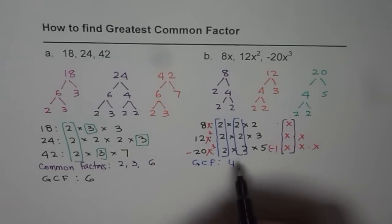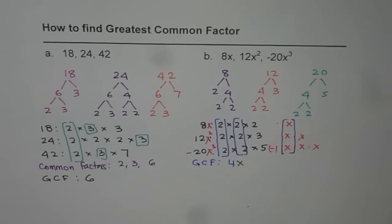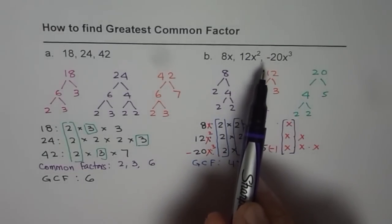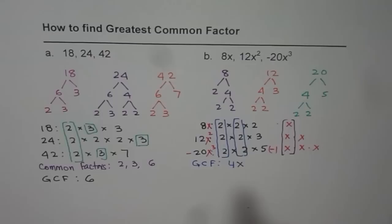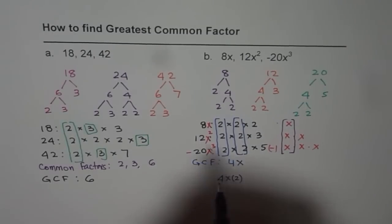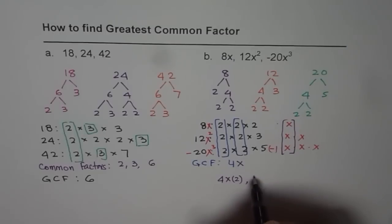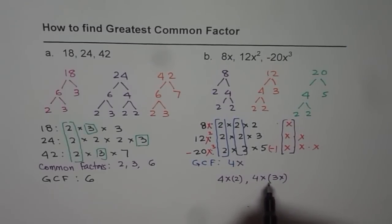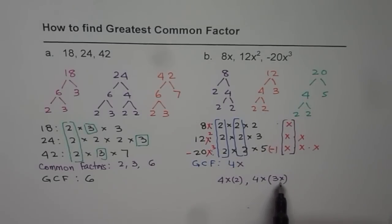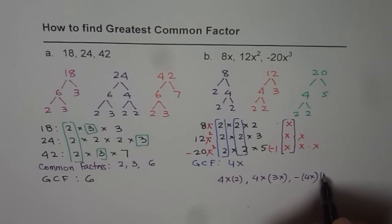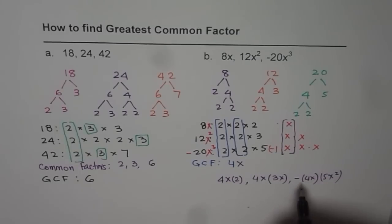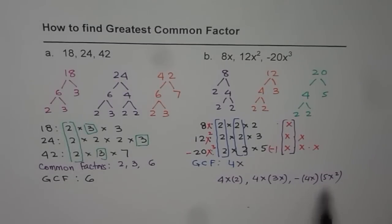Combining both the numeric and variable parts, the greatest common factor is 4x for 8x, 12x squared, and minus 20x cubed. When we say 4x is the greatest common factor, that means each term can be written as a product of 4x times something else. So 8x equals 4x times 2; 12x squared equals 4x times 3x; and minus 20x cubed equals minus 4x times 5x squared. When you multiply minus 4x and 5x squared you do get minus 20x cubed.